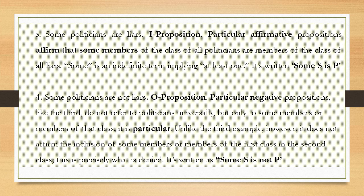Number four — 'Some politicians are not liars' — is an O proposition. It is particular and negative. It is negative because it is denying something with 'not,' and it is particular because it does not refer to politicians universally but only to some members of that class. The format of the O proposition is 'Some S is not P.'